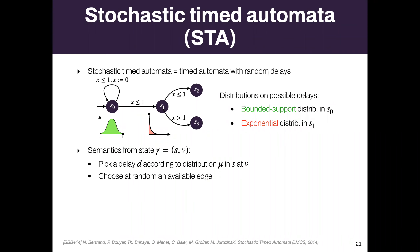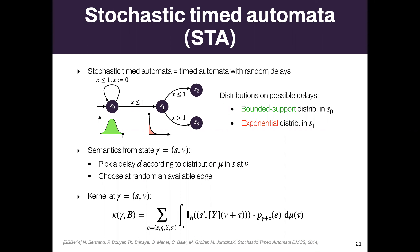We can also formalize this using kernels in a stochastic transition system. The idea is that we sample the next delay. In standard timed automata, you select the delay non-deterministically. In stochastic timed automata, you select the delay using a distribution defined in the model — it's a purely stochastic model with no non-determinism.